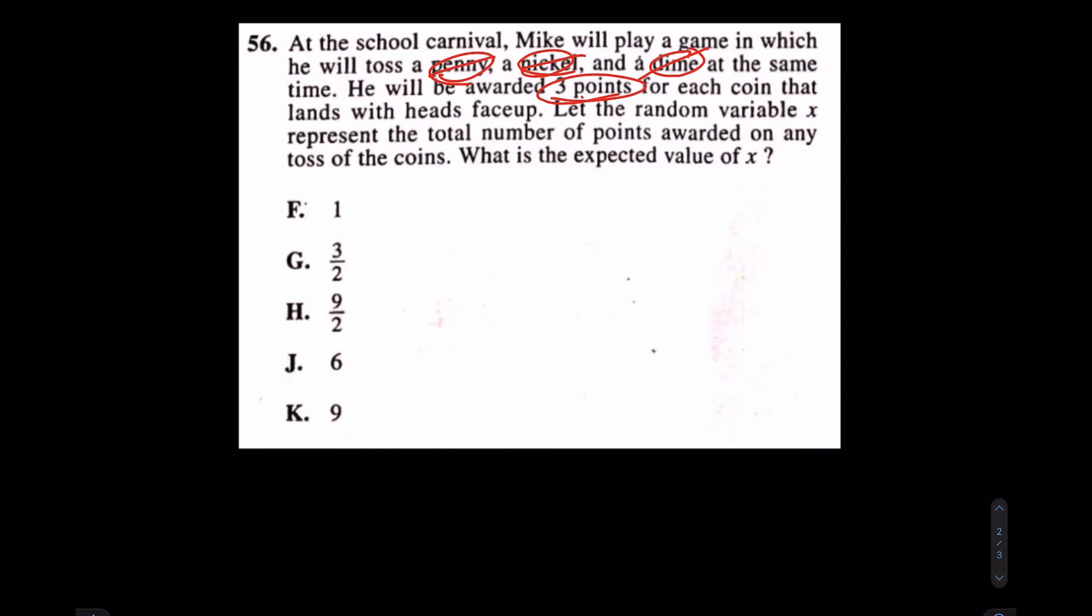Well, what did we say earlier? We said, what is the probability of the event happening? And I'll write that P again for you. So this is your P, and this is the points associated with it. So what's the chance that the penny lands heads up? Remember, that's the whole point of this question. It's one half. And how many points are you going to get there? You're going to get three. What's the chance you'll draw the nickel heads up? One half. How many points for that? Three.